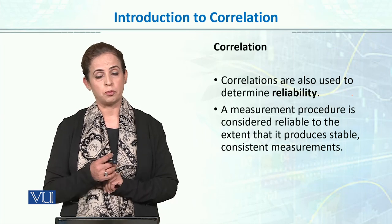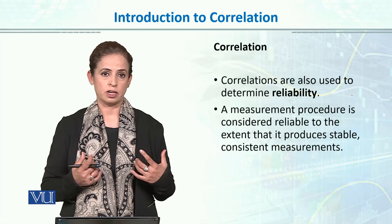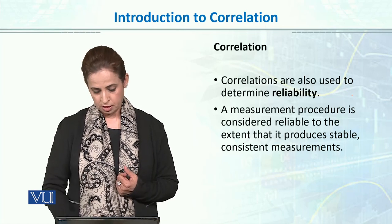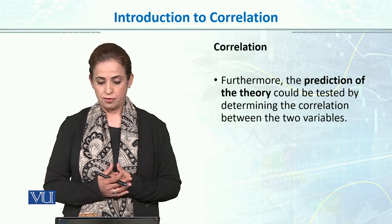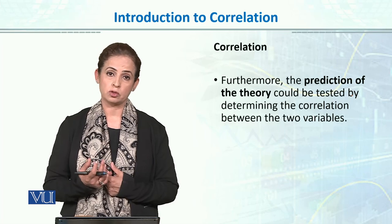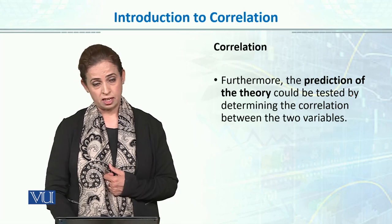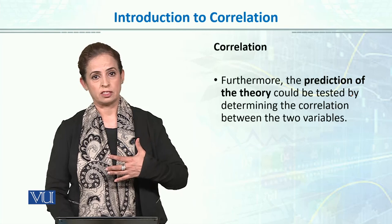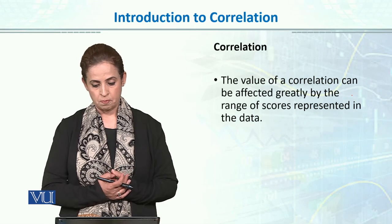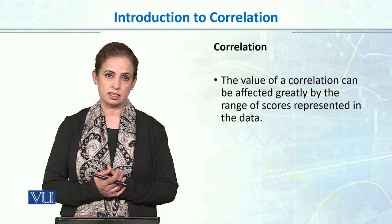Correlation is important not only to understand the environment around us and how variables are occurring, but also for prediction, for reliability, for validity, and for doing science. Furthermore, the predictions of a theory can be tested by determining the correlation between two variables. How accurate or useful a theory is can also be assessed with the help of a correlation coefficient.